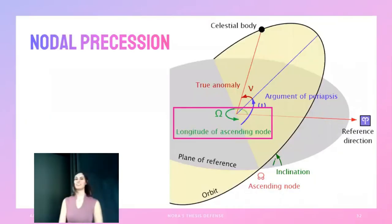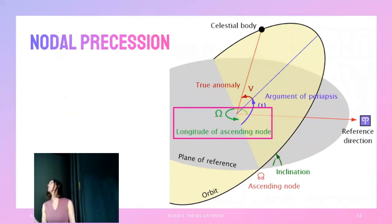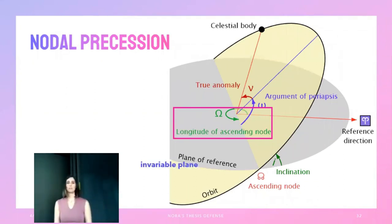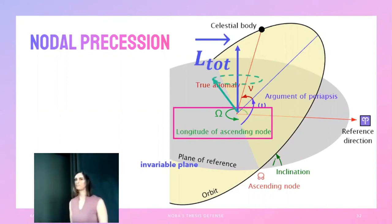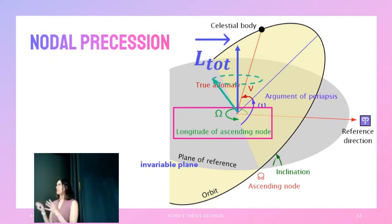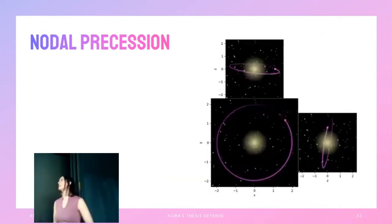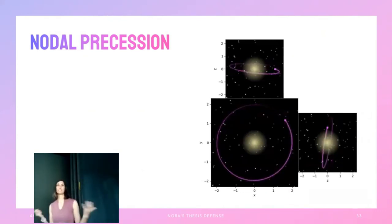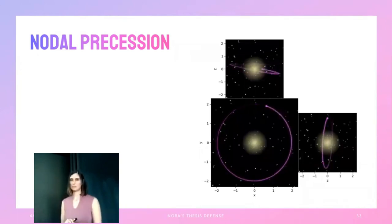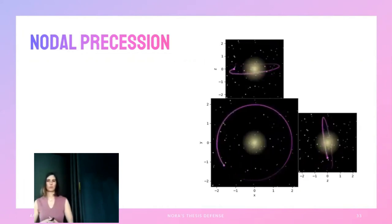Nodal precession is basically just the longitude of ascending node Omega changing over time. Taking the invariable plane as the reference, the system's total angular momentum vector points straight up. If you drew a vector perpendicular to the orbital plane, that vector would make little circles around the total angular momentum vector. I made a cartoon to show what nodal precession looks like, though it's sped up — in general nodal precession is not this fast.